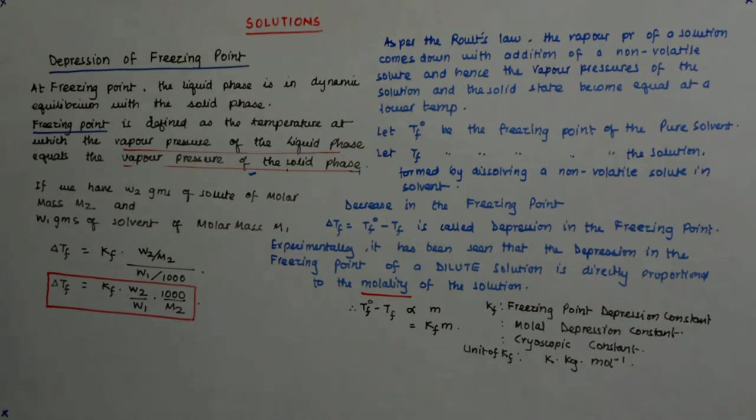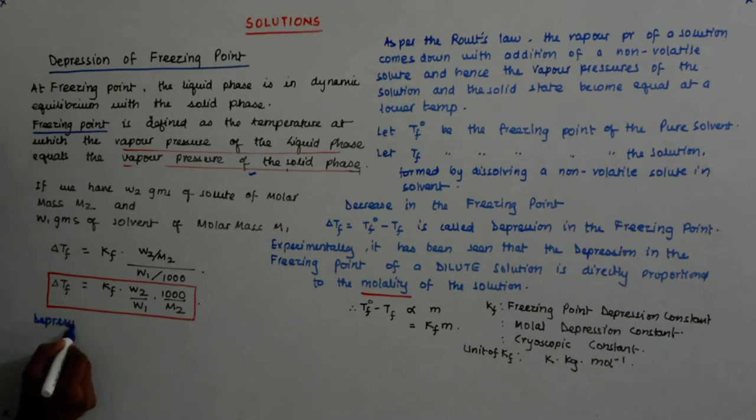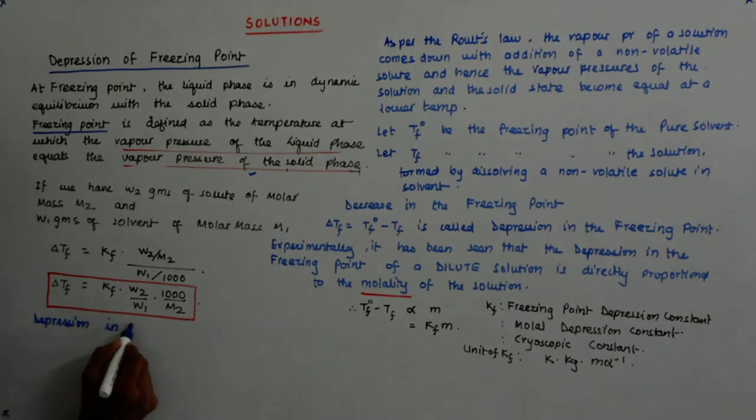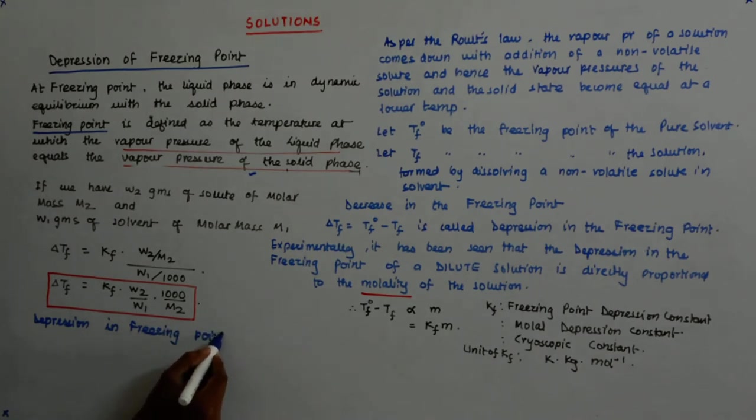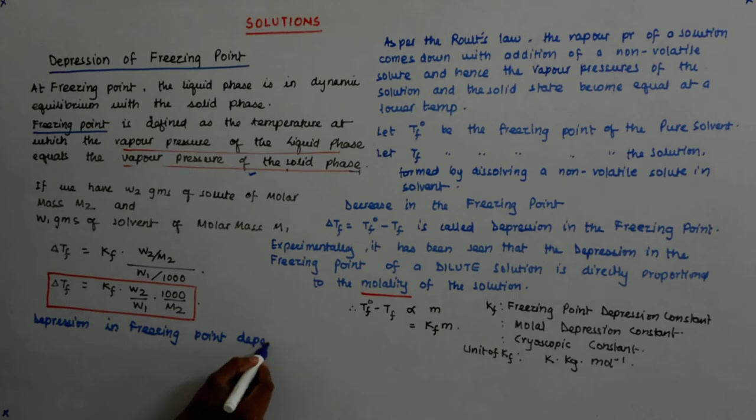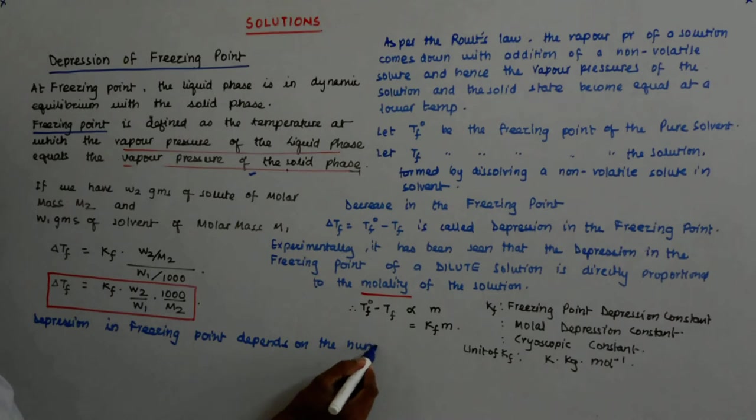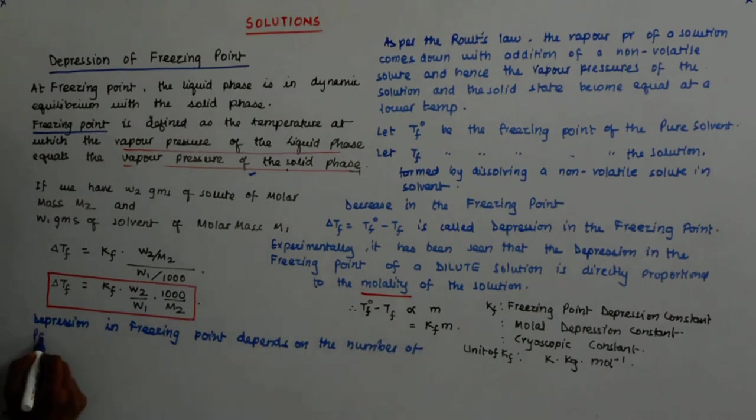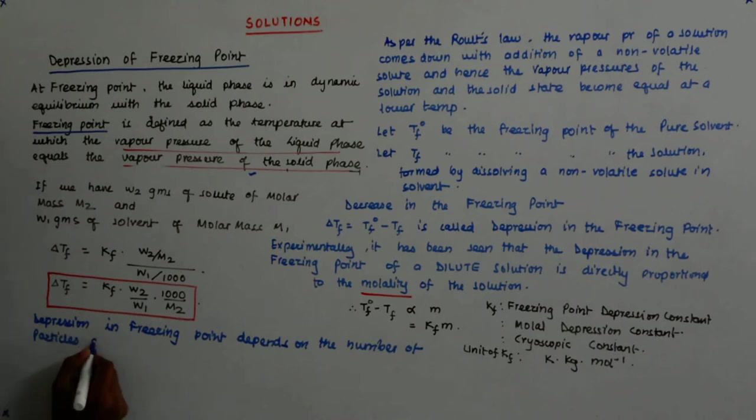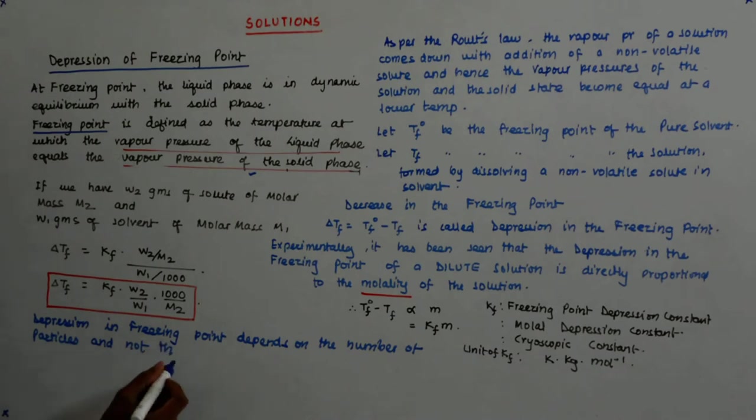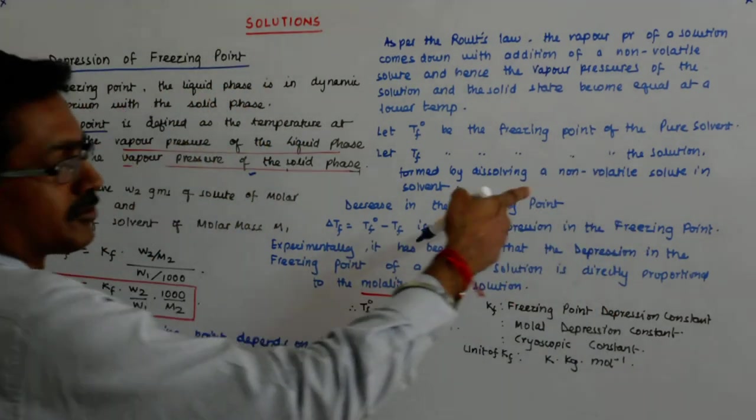The depression in freezing point depends on the number of particles. But if it only depends on the number of particles, then how do positive and negative deviations come into play? We are talking about a non-volatile solute.